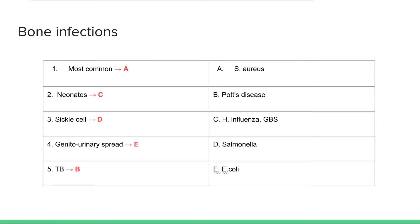Moving on to some bone infections: the most common cause of osteomyelitis is Staph aureus. In neonates it's mostly H. flu and Group B Strep. In sickle cell it's mostly Salmonella. Genitourinary spread — basically you get a UTI and then it spreads to the bones — that's E. coli. And TB can spread to the vertebrae, which we call Pott's disease.